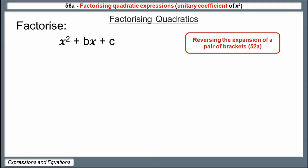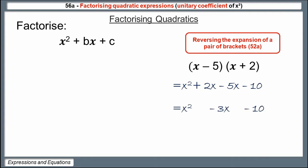To remind ourselves how expansion worked: if we start with a pair of brackets, say x minus 5 and x plus 2, we multiply every term in the first bracket by every term in the second bracket. That gives us x-squared plus 2x minus 5x minus 10, which simplifies to x-squared minus 3x minus 10. Now to reverse this, we need to understand the link between the numerical terms in the brackets and the coefficient of x and the constant.